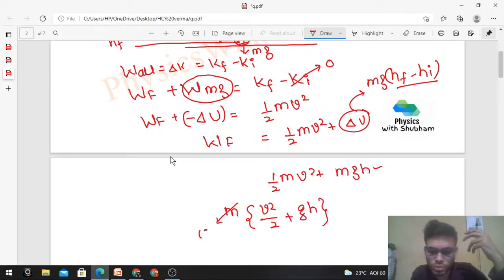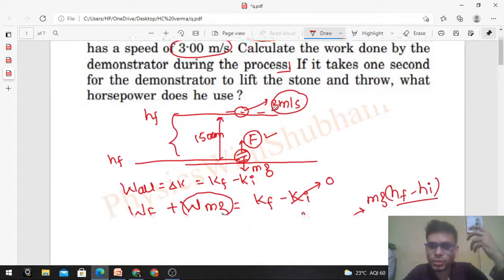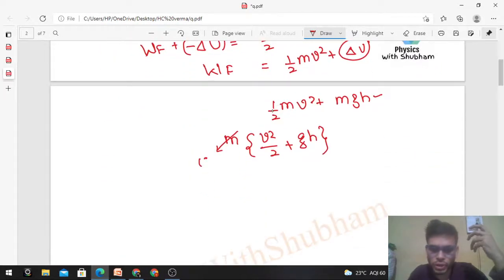Everything is given. Mass is 200 grams, so 0.2 kilograms. V is 3 meters per second. g is 9.81, and h is 150 centimeters, which is 1.5 meters. From here we can calculate the work done by the demonstrator.